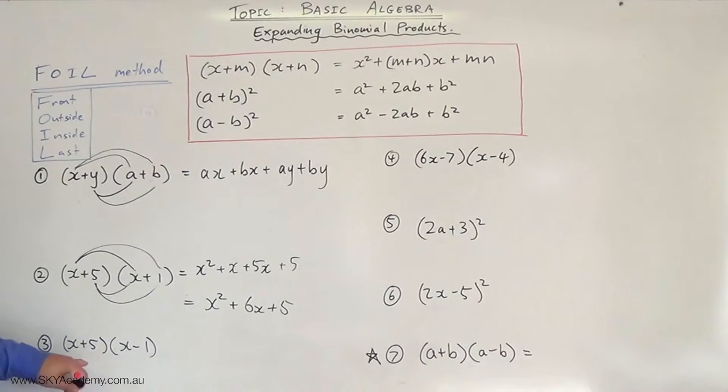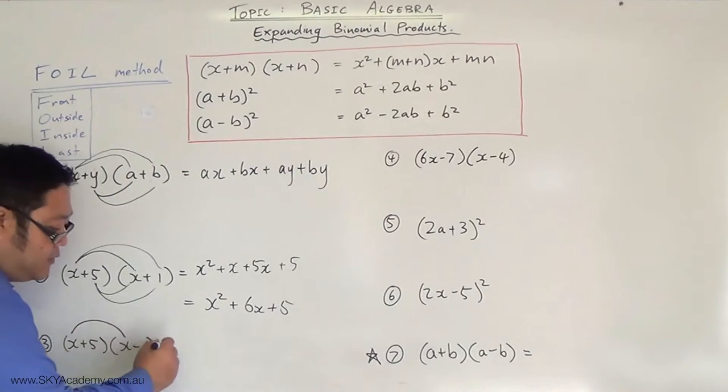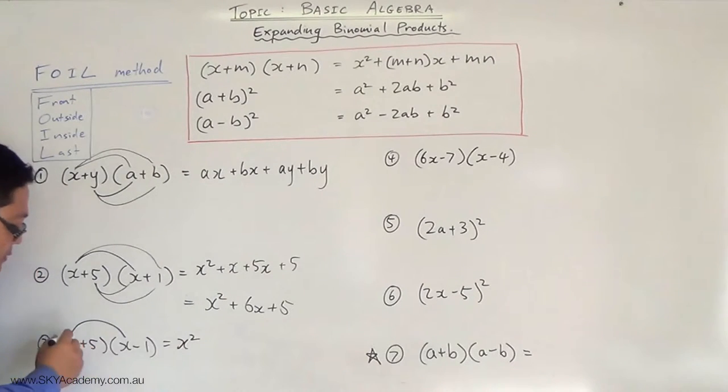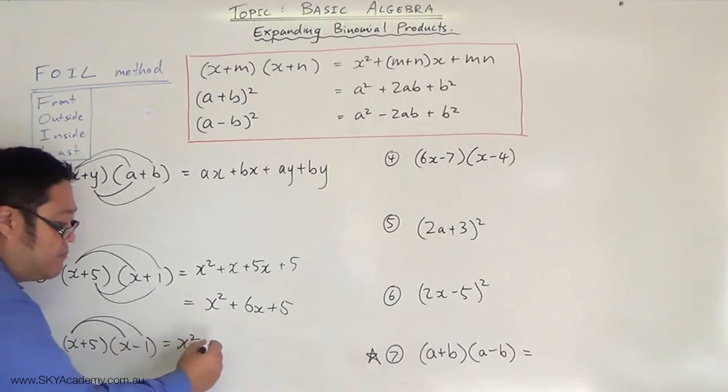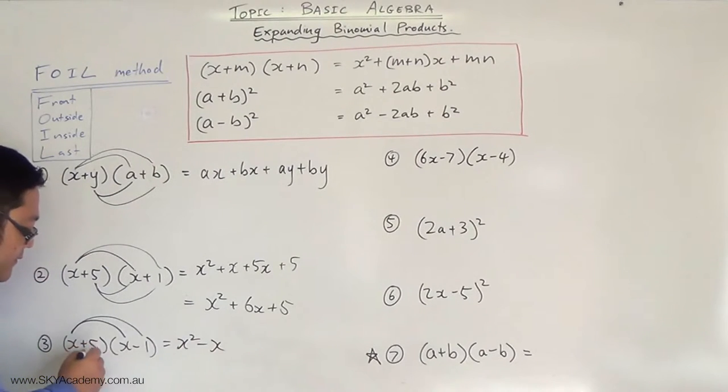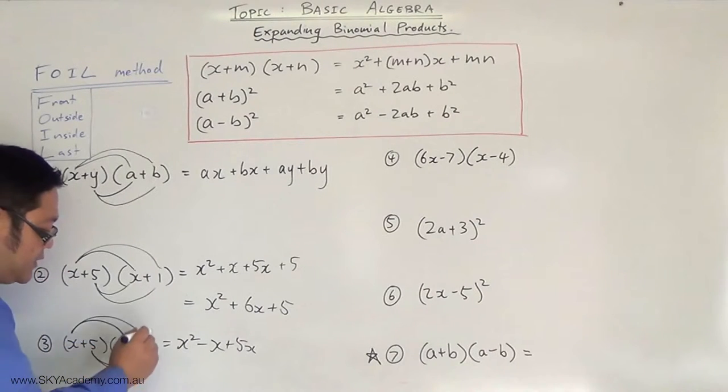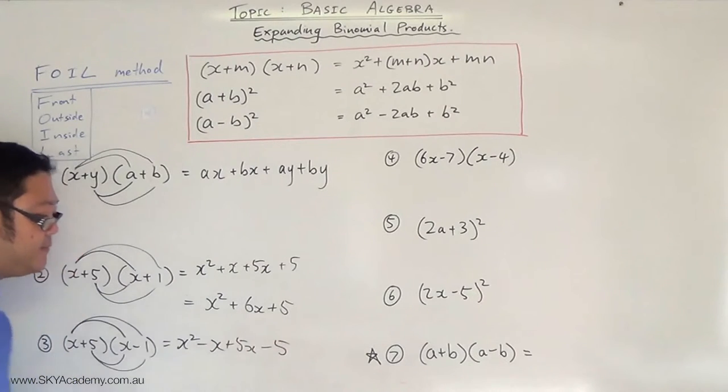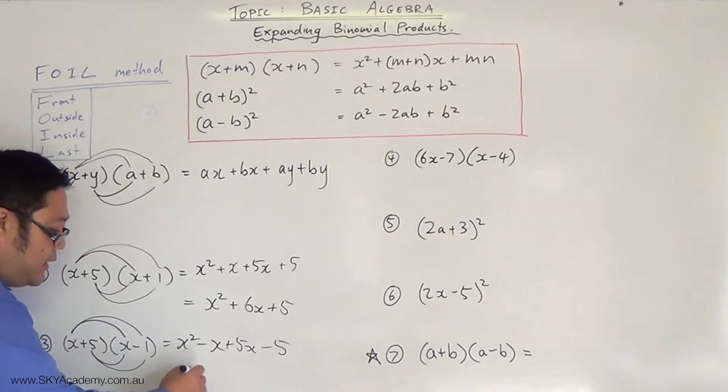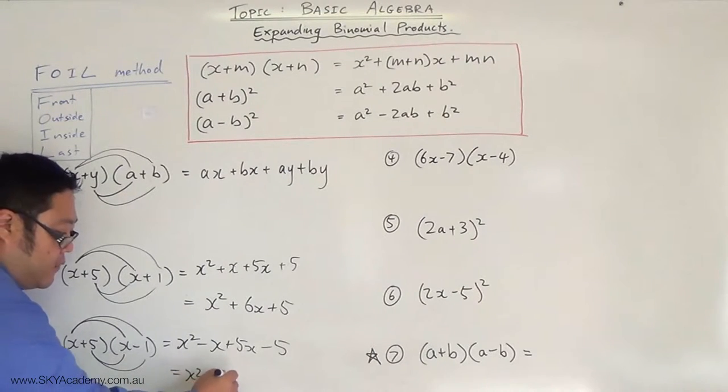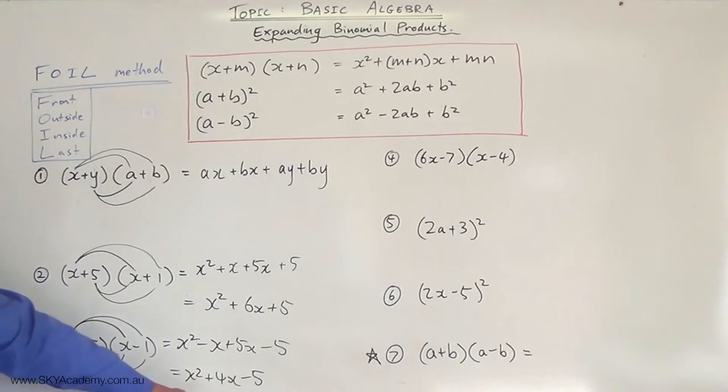Let's do this one. This one is slightly different because you've got negatives. So x times x gives you x². x times minus 1 gives you minus x. 5 times x is 5x. 5 times minus 1 is minus 5. Add them together and it gives you x² + 4x - 5. And that's your answer for that one.